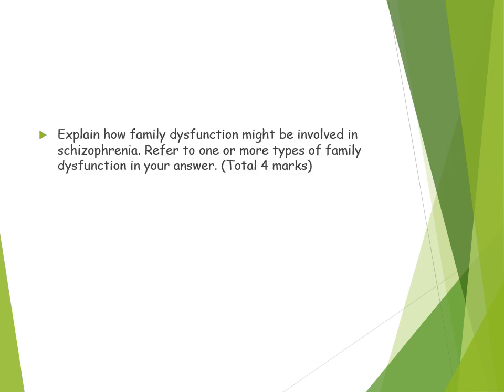For a straightforward outline question — explain how family dysfunction might be involved in schizophrenia, referring to one or more types — the two types are double bind and expressed emotion. You can do both in less detail or one in more detail. If doing one, use point, evidence, example — remember to include four points. If doing both, use point, example, point, expand for each. Make sure you are elaborating on your points to demonstrate to the examiner that you understand what family dysfunction is.